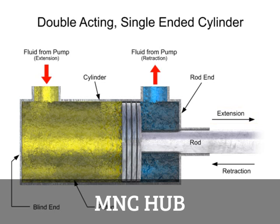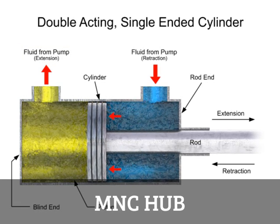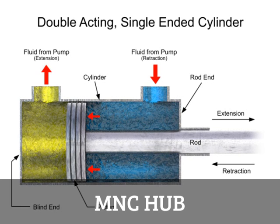When the directional control valve is shifted, it sends fluid into the rod end port, out of the blind end port, and back to the tank. Pressure builds up and generates a force on the other side of the piston, causing the retraction stroke.